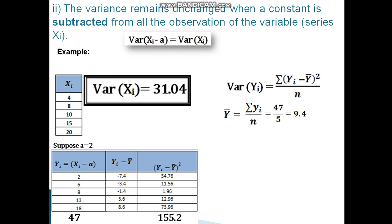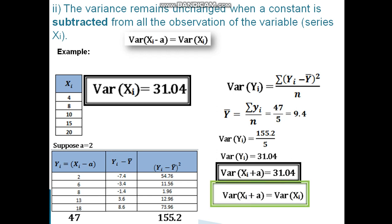The sum of squared deviations is 155.2, so variance of yi equals 155.2 divided by 5, which equals 31.04. Therefore, variance of (xi minus a) equals variance of xi, which equals 31.04. The variance is unchanged when a constant is subtracted.